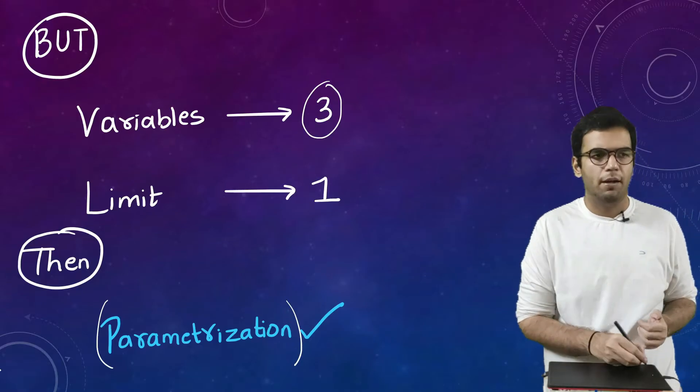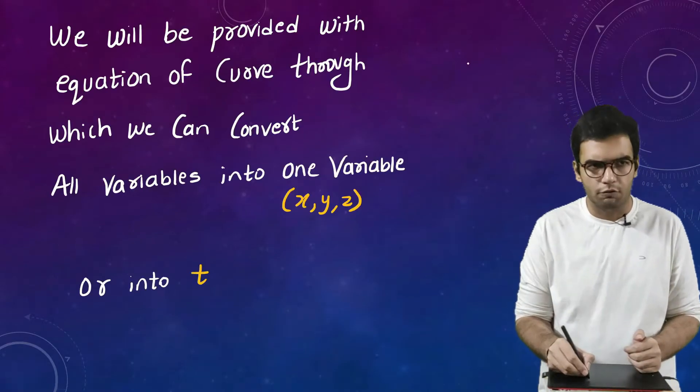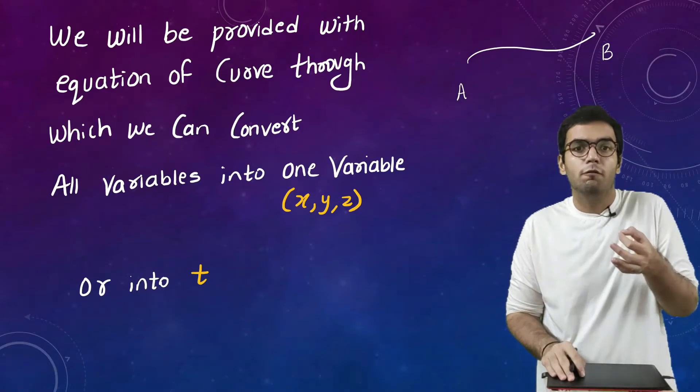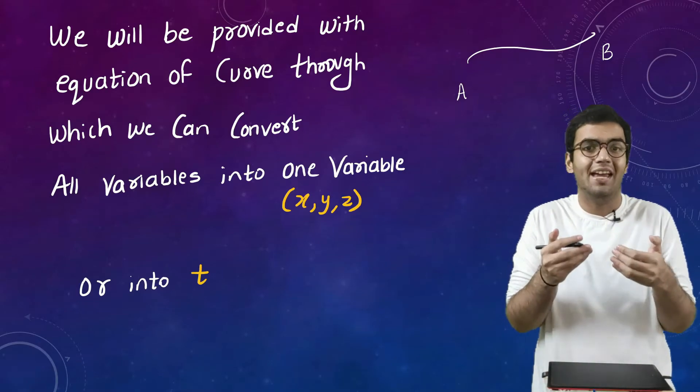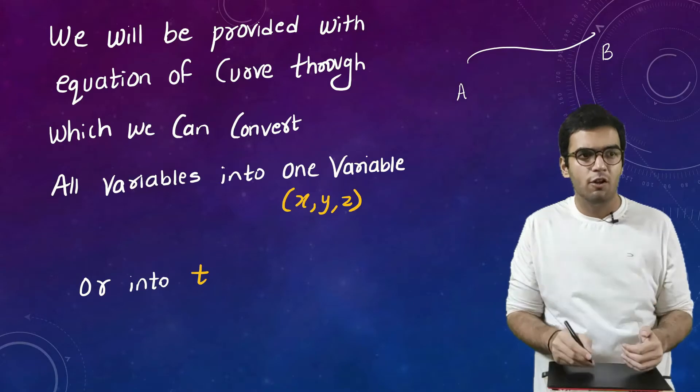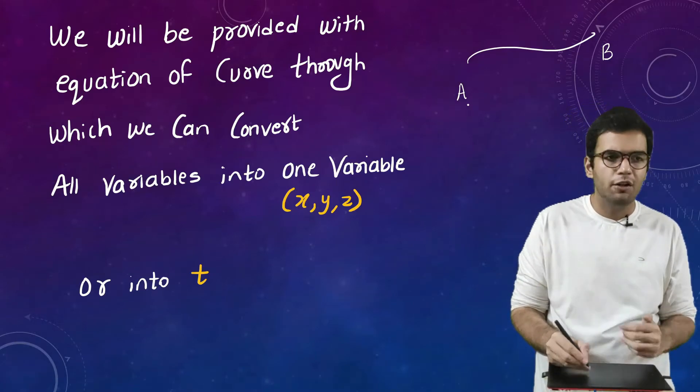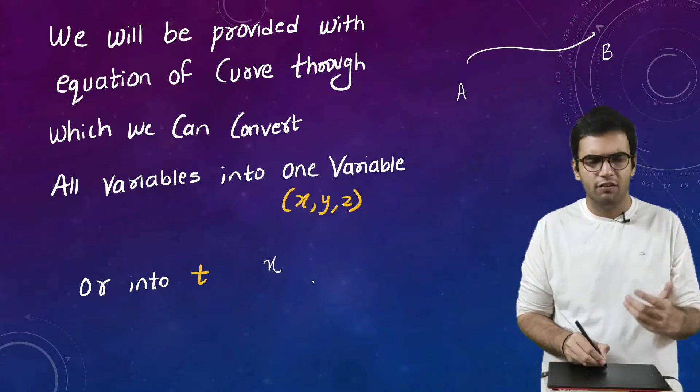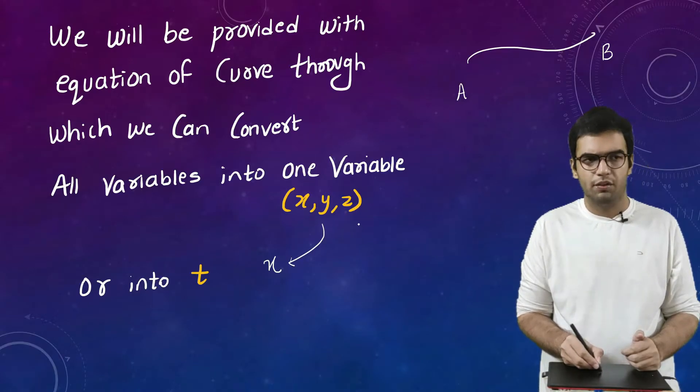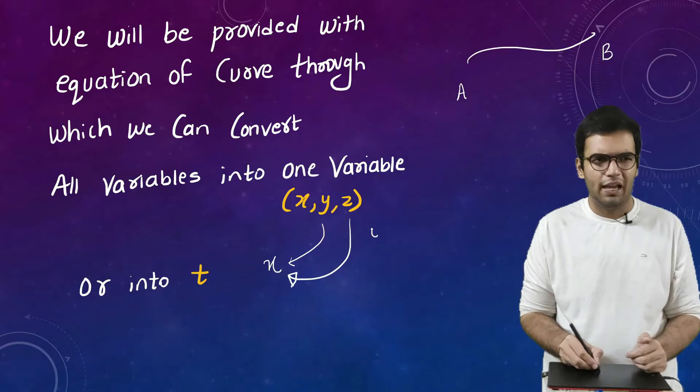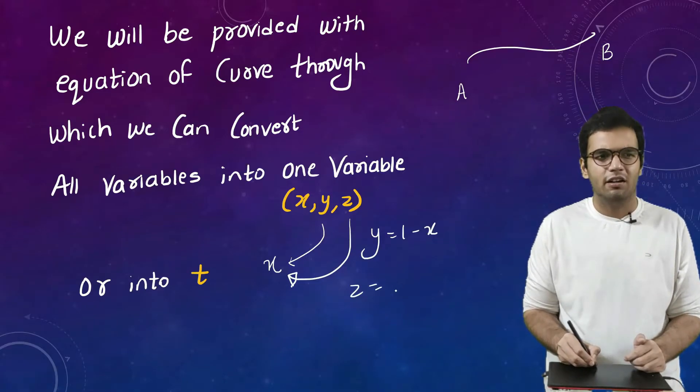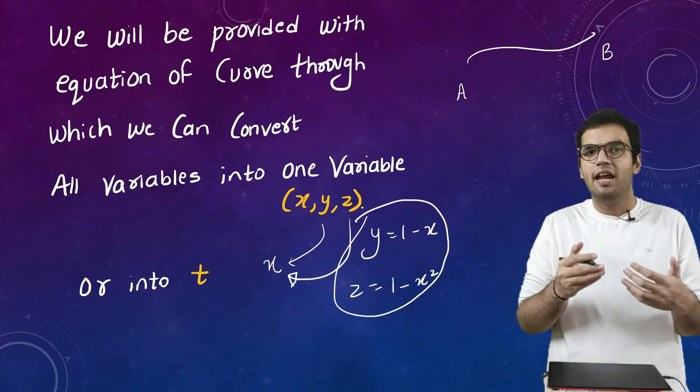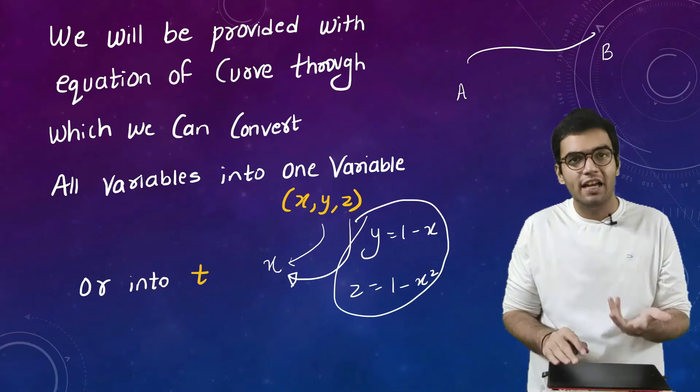So what is the meaning of the word parametrization? See we are considering here a curve, right? We have been given a curve which starts from A and ends towards B. So for that curve we will also be provided with an equation of that curve. Okay, so by using that equation of that curve we will try to convert the variables into one form. For example I can write x as x, I can convert y into x, I can convert z into the form of x. For example I can write y is equals to 1 minus x, I can write z is equals to 1 minus x square, depending upon the equation. This was just a random example.